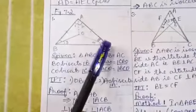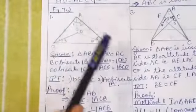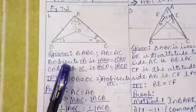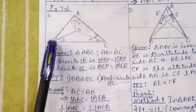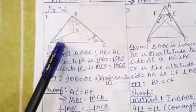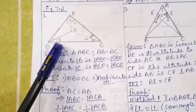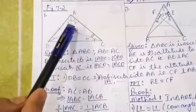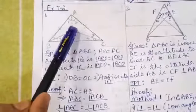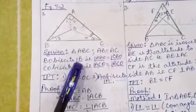Here we have a triangle ABC in which AB equals AC. BO bisects angle B, which means angle B is divided into two equal angles: ABO and CBO. These are the two equal halves of angle B.